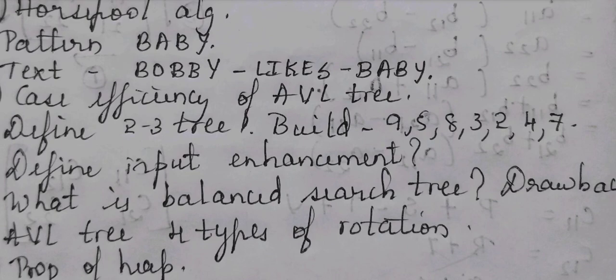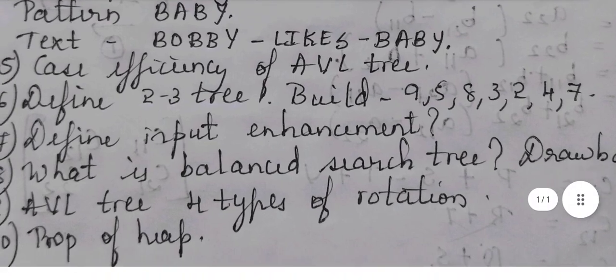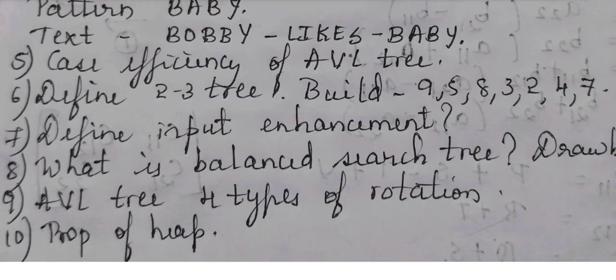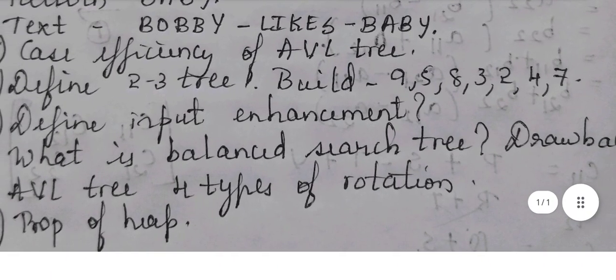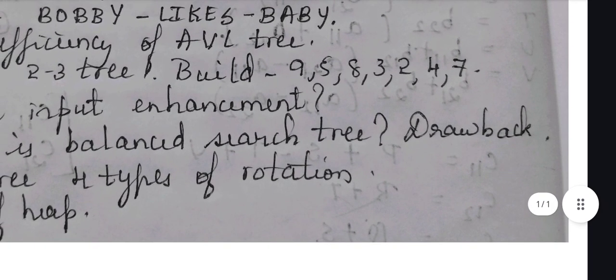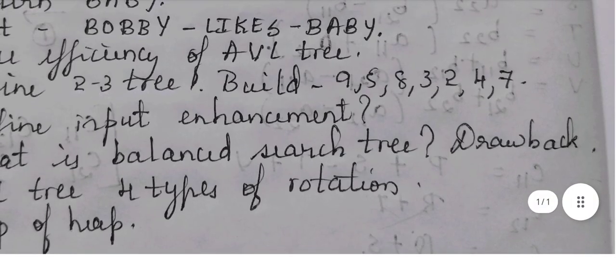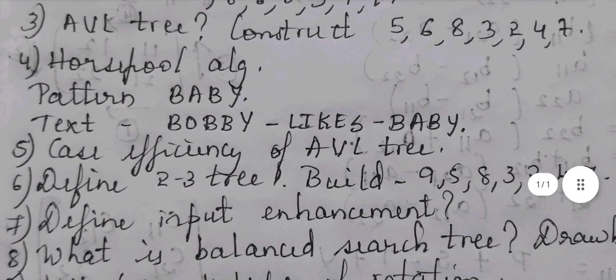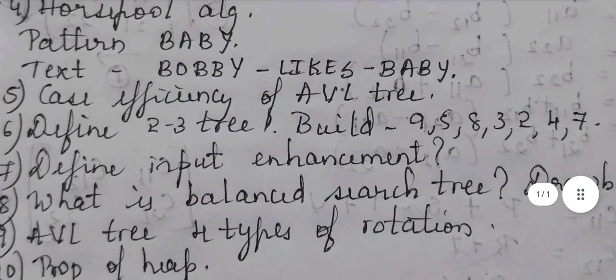Then what is input enhancement - rarely asked but important one. Then comes what is balanced search tree and the drawback of balanced search tree. Also learn the drawback of AVL tree that can be asked this time because last time they've already asked what is the drawback of the balanced search tree.